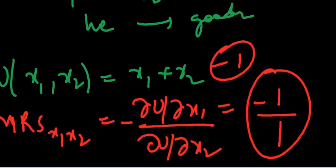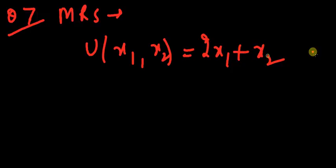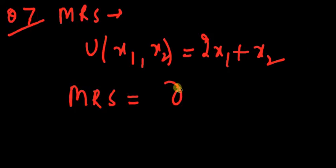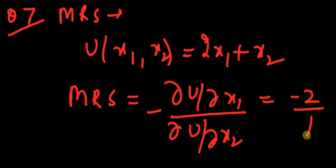So the slope is minus 1. Now let's go further — I will give you a question to solve. Find the MRS for the utility function 2x1 plus x2. I hope you have worked that out.